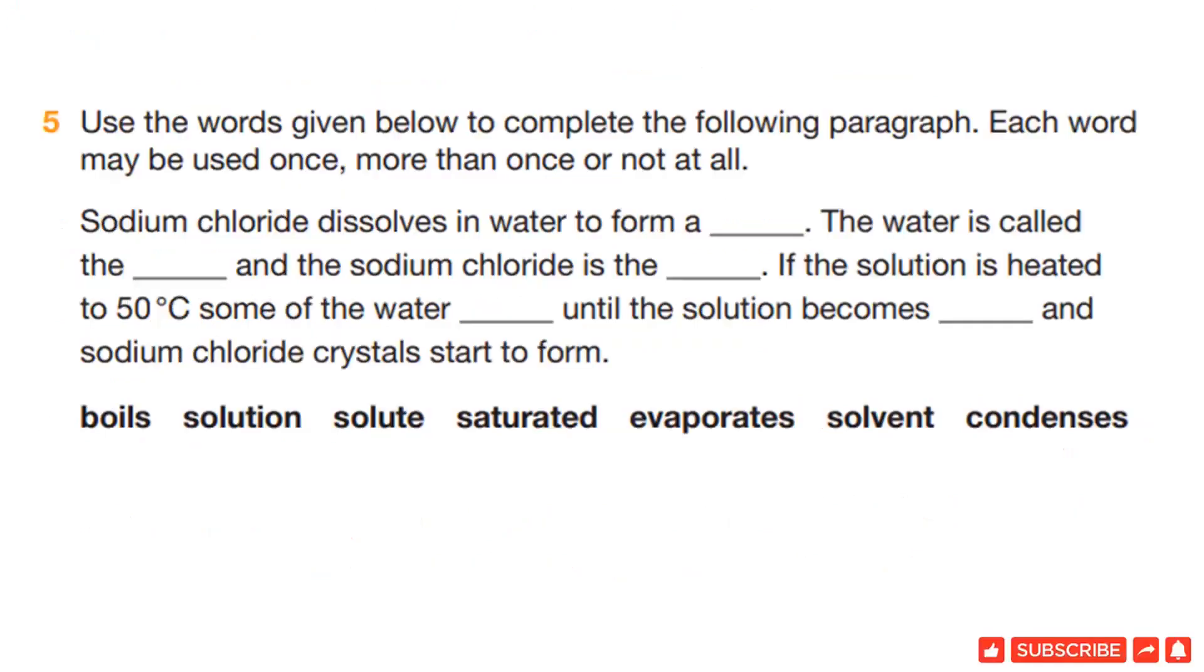Question 5. Use the words given below to complete the following paragraph. Each word may be used once, more than once or not at all. Sodium chloride dissolves in water to form a solution. The water is called solvent and the sodium chloride is called solute. If the solution is heated to 50 degrees Celsius, some of the water will evaporate until the solution becomes saturated and sodium chloride crystals start to form.